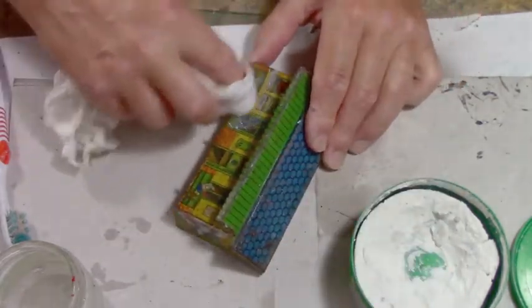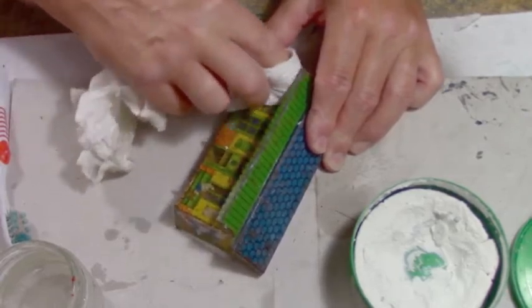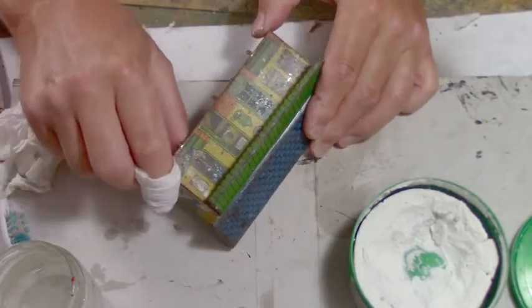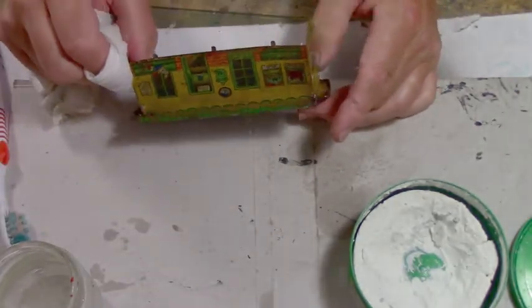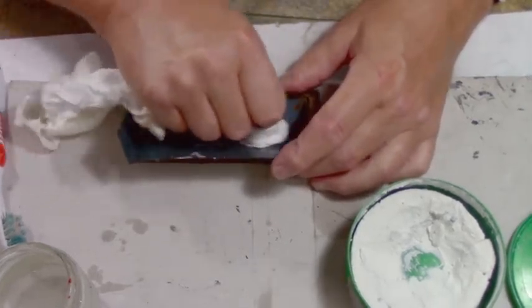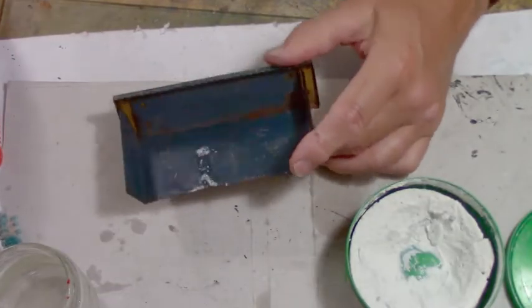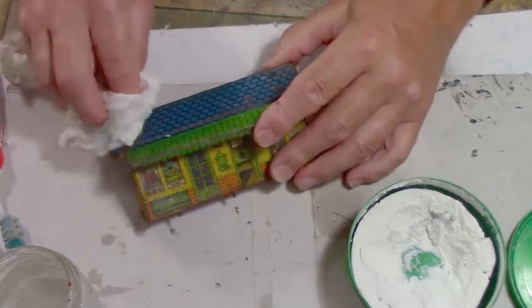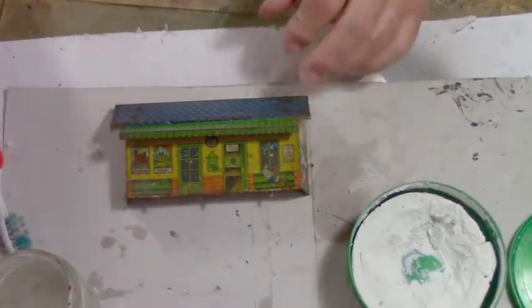I'm going to use a bit more on it. Sometimes you can see some stuff come off, but this is fairly rusted. Anyways. There we go. That's how I clean my toys up. There's a bit of white here. Anyways. Voila!